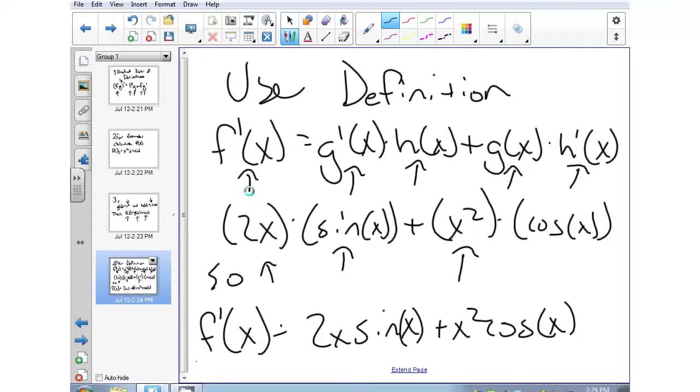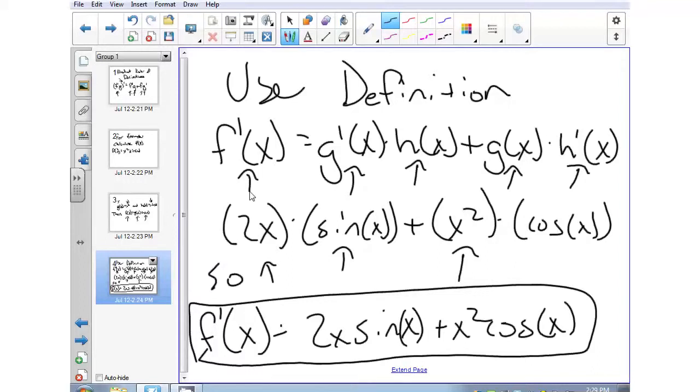Our final product is right here. So we're going to say f prime of x equals 2x sine x plus x squared cosine of x.